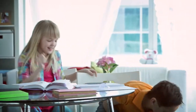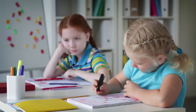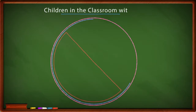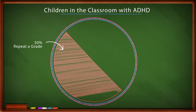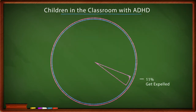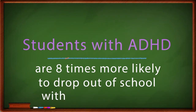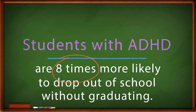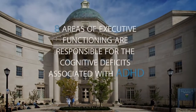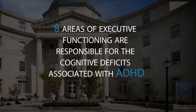Children with ADHD represent a large number of students in our schools and present a huge challenge for educators. How do teachers help students with ADHD in the classroom? The fact is 50% of young children with attention problems repeat a grade, 46% get suspended, and 11% get expelled. Students with ADHD are eight times more likely to drop out of school before graduating. Researchers at Yale Medical School have determined that eight areas of executive functioning are responsible for the cognitive deficits associated with ADHD.